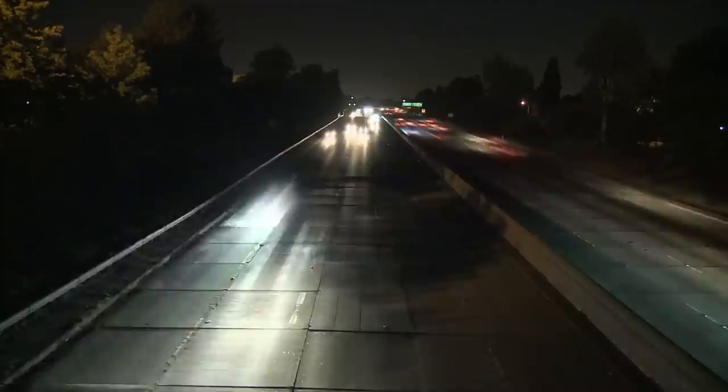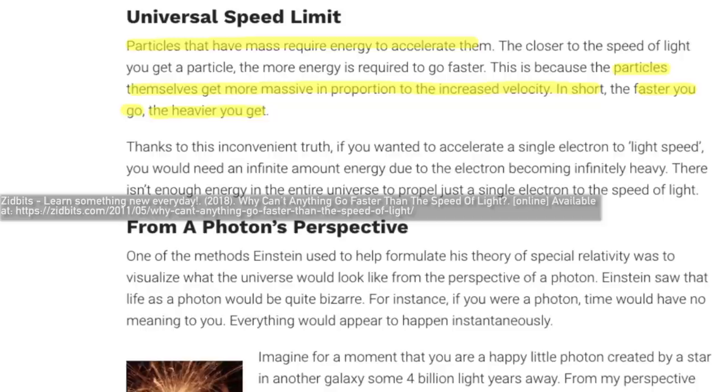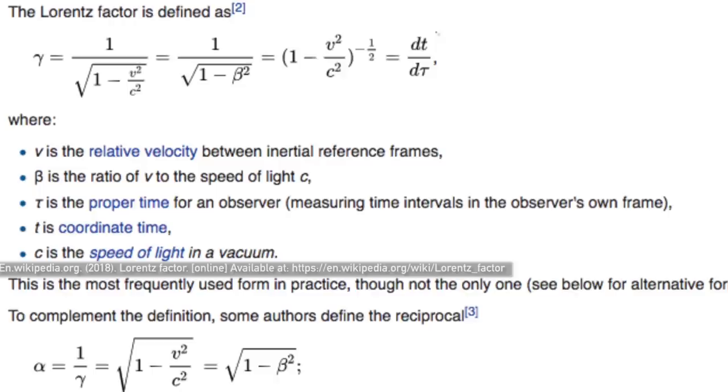progressively more energy is required to accelerate the closer you get towards the speed of light. This is because the mass of particles changes in proportion to their velocity through a relativistic effect. The actual mass doesn't change, but the particle's mass is nevertheless multiplied by a factor, the Lorentz factor.